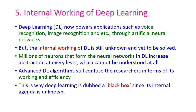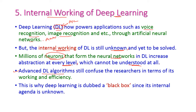The last problem is the internal working of deep learning. Deep learning is actually a sub-part of machine learning, and there are many powerful algorithms to solve voice recognition, image recognition, and more through artificial neural networks (ANN). But the internal working of such algorithms is still unknown. Millions of neurons are connected to each other in the neural network at every level, and this is very difficult to understand. Advanced deep learning algorithms still confuse researchers in terms of their working and efficiency. For this reason, deep learning is otherwise called a black box, because its internal architecture is still unknown.